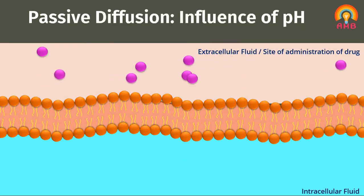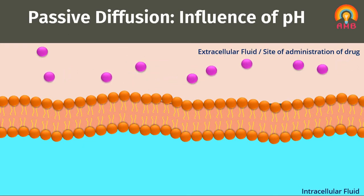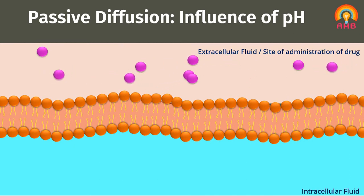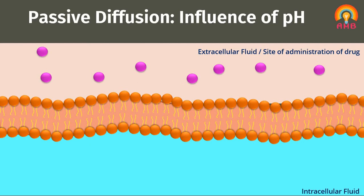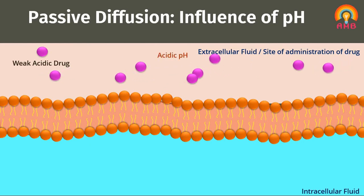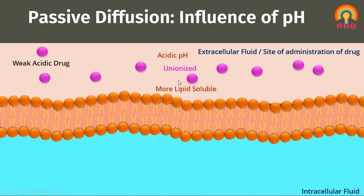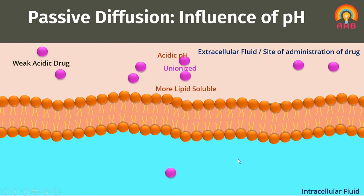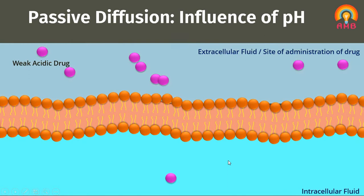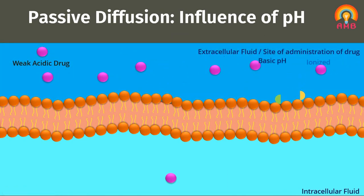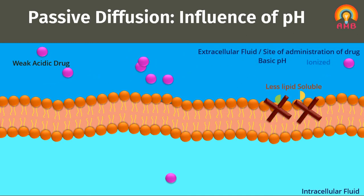Passive diffusion is dependent on lipid solubility, and lipid solubility is dependent upon the pH of the environment in which the drug is present. Most drugs are weak electrolytes, meaning their ionization is pH dependent. Thus, weak acidic drugs in an acidic medium remain unionized. Unionized drug is more lipid-soluble and thus easily diffuses through the membrane very rapidly. But the same weak acidic drug in a basic medium gets ionized and becomes less lipid-soluble, and is thus unable to cross the membrane.